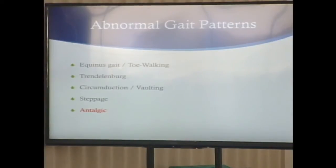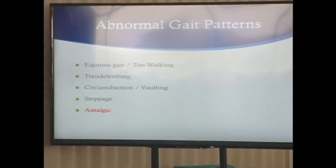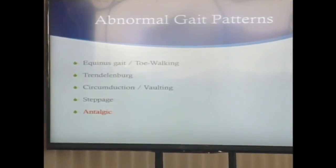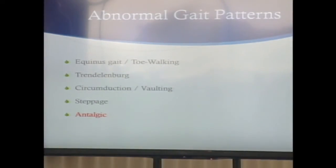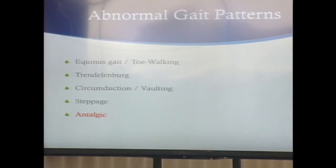There are different types of abnormal gait patterns. There's a toe-walking gait, Trendelenburg gait — that's where you lean over the side that is weak in your abductors. A circumduction or vaulting gait, a steppage gait — you would see that in a foot drop situation where they're lifting their toes and knees up higher to clear their toes off the ground. And what we'll focus on today is antalgic gait.